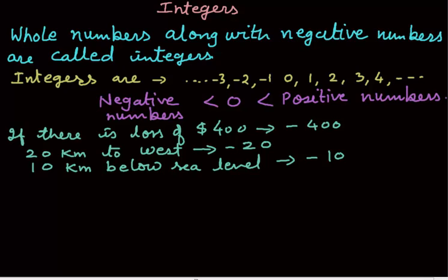Suppose temperature above 30 degrees can be represented as positive 30. Now, comparison of integers.